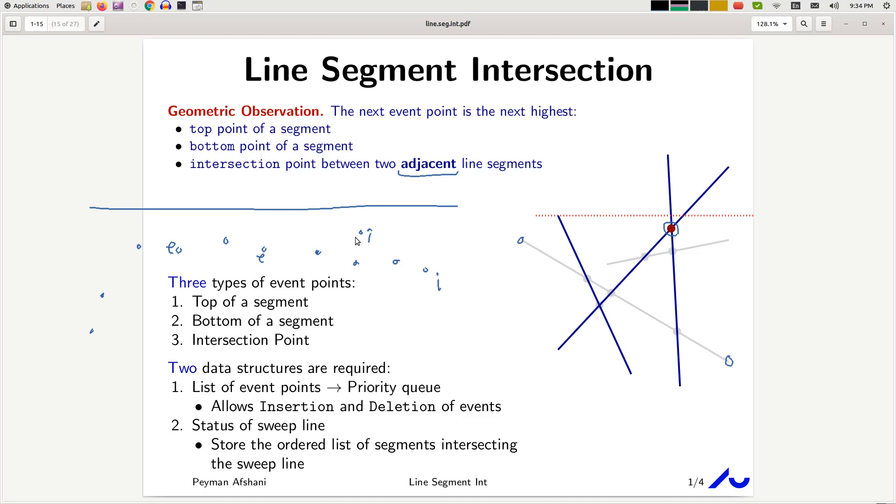If the next event point is an intersection point, such as this one, then it must be the intersection point of two adjacent line segments.